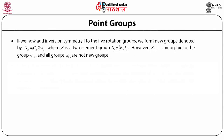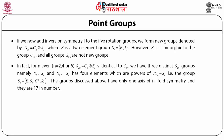Adding inversion symmetry I to the five rotation groups forms new groups denoted S2n, which is a direct product of Sn with S2, where S2 is the two-element inversion group with elements E and I. Since S2 is isomorphic to C1h, not all Sn groups are new. For n even (n = 2, 4, 6), S2n equals Cn cross S2, which is identical to Cnh. Thus there are only three distinct S2n groups: S2, S4, and S6. The group S4 has four elements: E, S4, C4², and C4³. The groups discussed so far have only one axis of n-fold symmetry and are 17 in number.